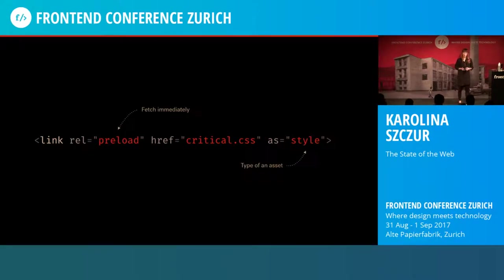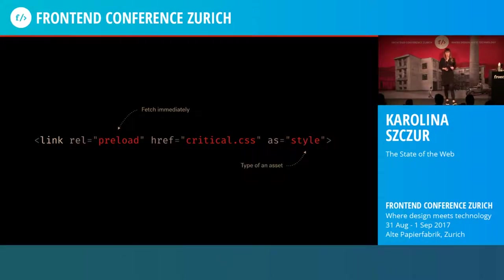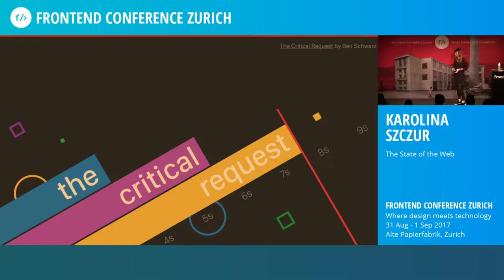With `link rel="preload"`, we're able to set the priority of those assets to high, so the browser will always fetch them immediately when it sees that tag — which is a pretty powerful strategy. The `as` attribute will ensure the right priority, content security policies, and setting the right accept headers. This technique looks fairly simple but it's extremely powerful, and it can yield significant performance improvements to the time-to-interactive metric, which really reflects the perceived user experience. I strongly recommend the critical request article on CSS Tricks, and also 'Preload, Prefetch, and Priorities in Chrome' by Addy Osmani.